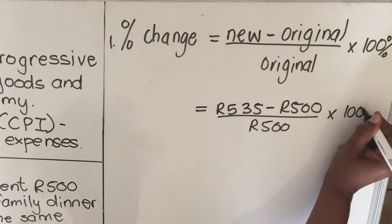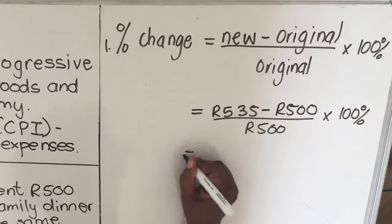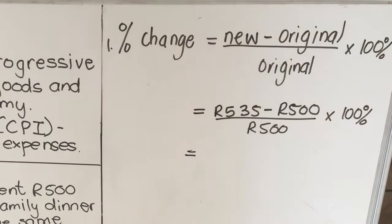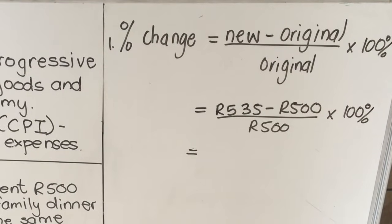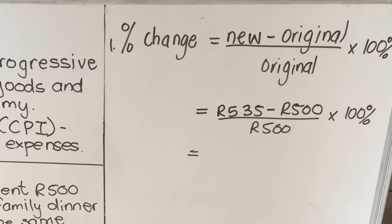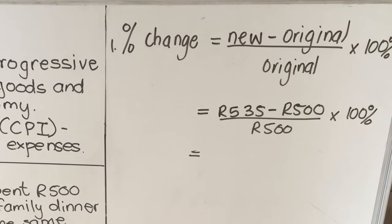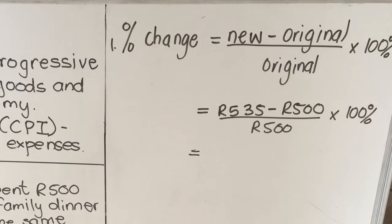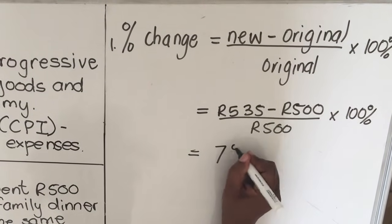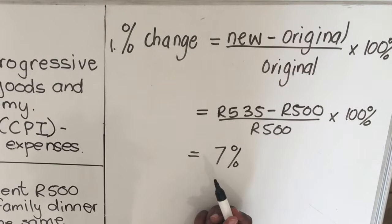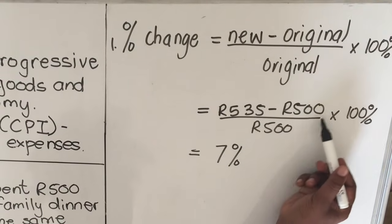This formula will usually be given in your question paper. Let's take our calculator: 535 minus 500, equals, divide by 500, then multiply by 100 percent. The answer is 7 percent. So from the original 500 rands, the price increased to 535 rands — that means it has increased by 7 percent.